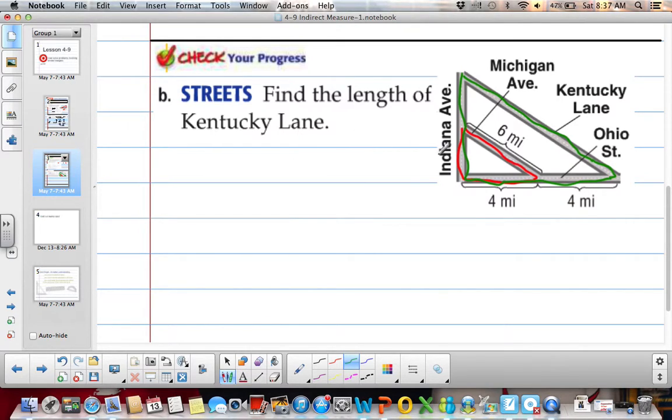So in this triangle right here, our smaller triangle, we don't know what this length is. But we do know that this leg is 4 miles and we know that our hypotenuse is 6 miles. Kentucky Lane is our big hypotenuse, or our hypotenuse of our big triangle. But we do know the whole length of this leg in our big triangle.